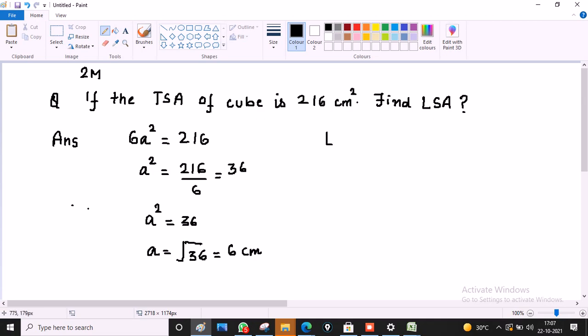Now lateral surface area of cube is 4A square. We can use the value of A square directly as 36. So the answer is 144 cm².